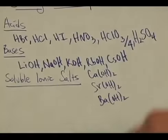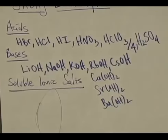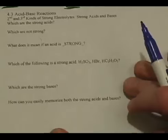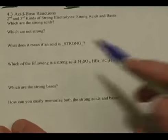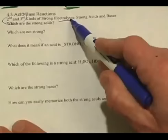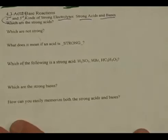And then, of course, the soluble ionic salts — those are the other strong electrolytes, and those you memorized the solubility rules for. Why is it important to know what the strong acids and strong bases are? Remember, knowing what the strong electrolytes are is the key to this chapter. The second and third types are the strong acids and strong bases; the first type was the soluble ionic salts.